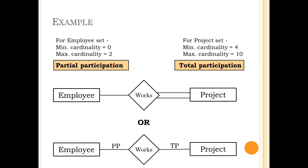Remember that the bracket form gives us the complete information, but total and partial participation cannot give the complete information. And keep in mind that all weak entities must have total participation with respect to their identifying relationship. I have already discussed about strong and weak entities in the ER Diagram video — watch that video from the link in the description box.